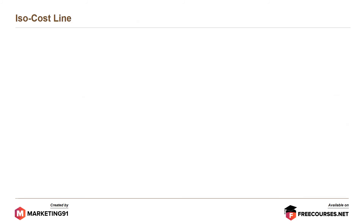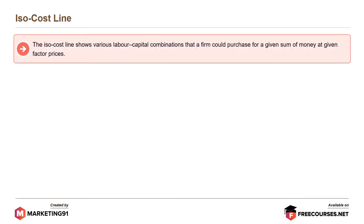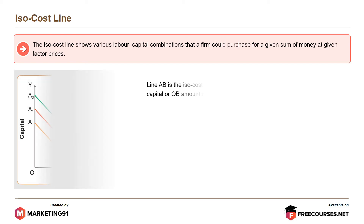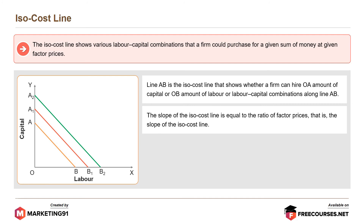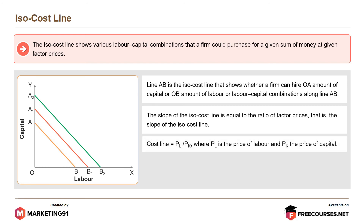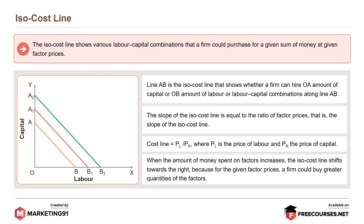Moving on to the isocost line. The isocost line shows various labour-capital combinations that a firm could purchase for a given sum of money at given factor prices. Line AB is the isocost line showing whether a firm can hire OA amount of capital or OB amount of labour, or labour-capital combinations along line AB. The slope of the isocost line equals the ratio of factor prices: PL divided by PK, where PL is the price of labour and PK is the price of capital. When the amount of money spent on factors increases, the isocost line shifts towards the right because the firm could buy greater quantities of the factors.